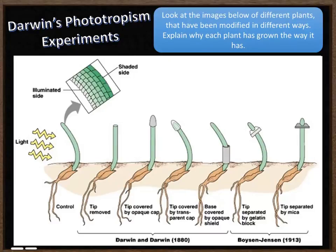Here are some images of different plants during phototropism experiments conducted by Darwin and other scientists. I'd like you to look at the images of these different plants that have been modified and explain why each plant has grown the way it has. For example, one plant has had the tip removed, one has had an opaque cover, one has had a clear cover, and some have been modified in other ways. Pause the video and try to explain why each plant has grown the way it has, always relating it back to auxin, that plant hormone we discussed earlier.